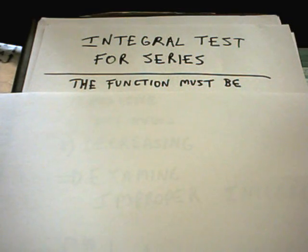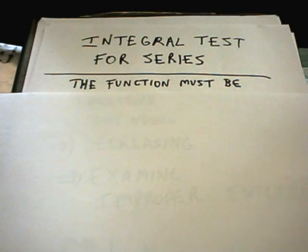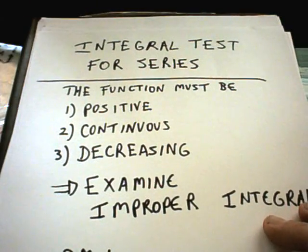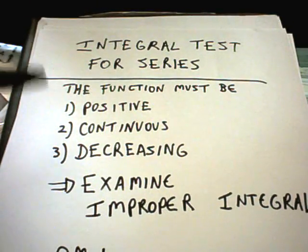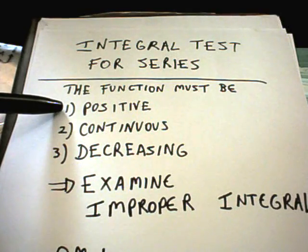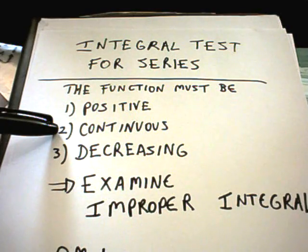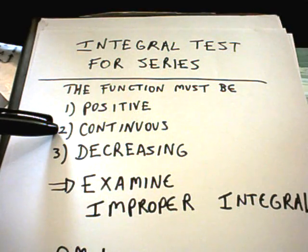This might be vague if it's the first time you're seeing it, but I'll do some examples in just a second. You're going to turn the series into a function, and that function must have particular properties. First, the function must be positive — all that means is if you graph it, it's going to be above the x-axis. It also has to be continuous.